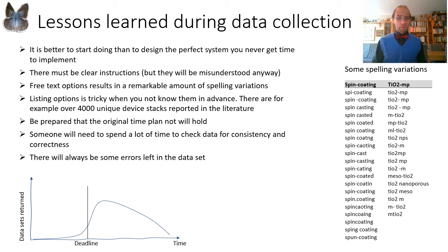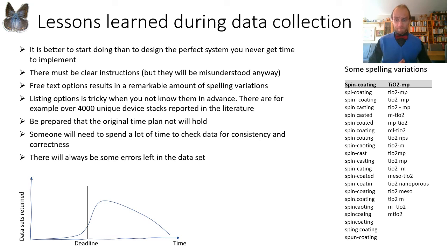If you have free text options, you will get a remarkable amount of spelling variations that you have to deal with. But at the same time, it's tricky to list options and alternatives when you don't know them in advance. An illustration of that problem is that the number of unique device stacks reported in literature exceeds four thousand. In a project like this, be prepared that your time plan will not hold. And even after you have collected all the data, someone has to spend time checking it for consistency and correctness — I spent about four months straight doing nothing else than that. But even after that, there will be errors in the dataset, and that's something you have to accept and deal with by designing a system that enables self-correction along the way.